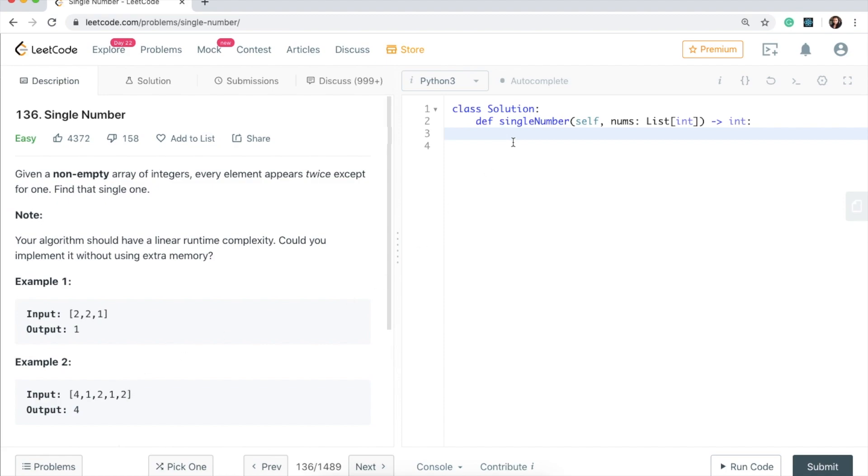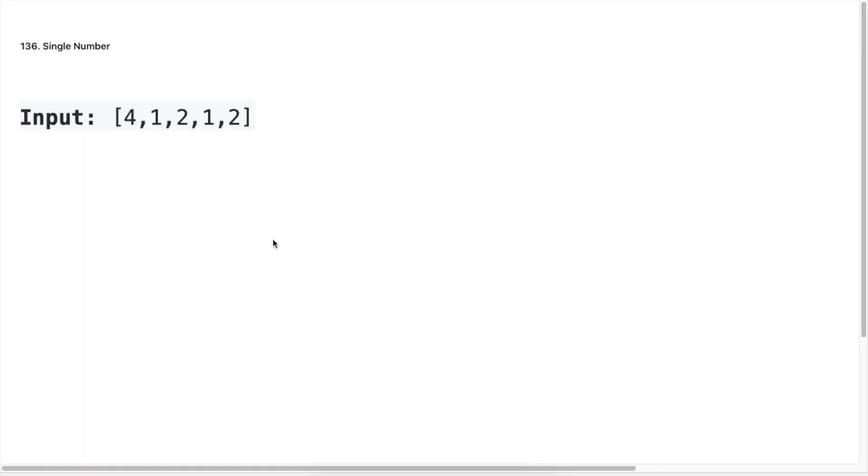So the first solution that would come to my mind if I see a question like this is going to be using a dictionary to solve this problem and to keep track of the count. So I will walk you through that solution first before we see how we can optimize on space for this solution.